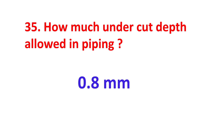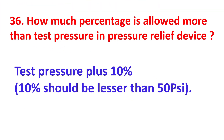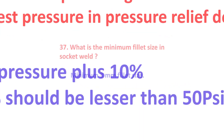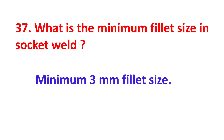How much undercut depth is allowed in piping? 0.8 mm. How much percentage above test pressure is allowed for a pressure relief device? Test pressure plus 10%, and that 10% should be less than 50 psi. What is the minimum fillet weld size? Minimum 3 mm fillet size.